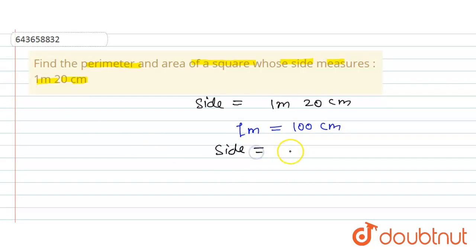side of square: one meter is equal to 100, so 100 centimeters plus 20 centimeters. So this is going to be equal to 120 centimeters. Okay, now we know that perimeter of square